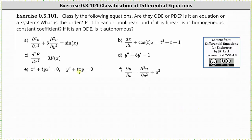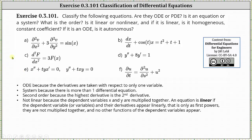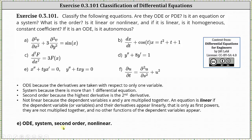Moving to equation E: this is the only problem where we have more than one differential equation, and therefore we have a system. The equations are ordinary differential equations because the derivatives are taken with respect to only one variable — based on the notation, the derivatives are with respect to t. The system is of second order because the highest derivative is the second derivative. The system is nonlinear because the dependent variables x and y are multiplied together in the second equation. In conclusion for E: we have an ODE system, it is of second order, and it is nonlinear.